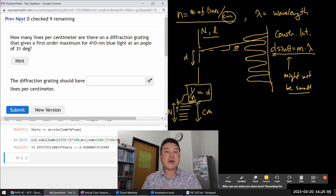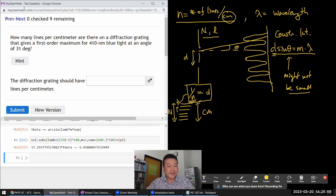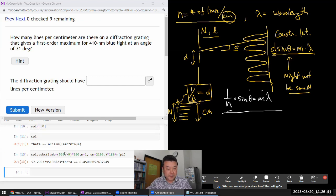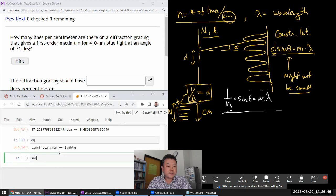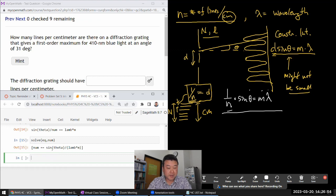This question asks how many lines per centimeter are there on a diffraction grating that produces a first order maximum for some blue light at some angle theta. With the substitution already in, it's 1 over n times sine theta equals m lambda. Staring at this equation, we've been given all the information other than n. We've been given the angle, m is first order, and we've been given the wavelength. They're asking for n.